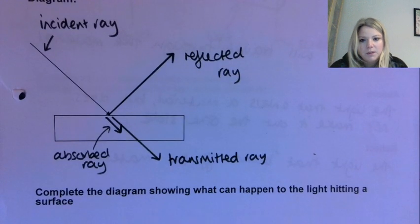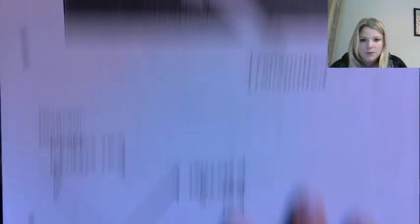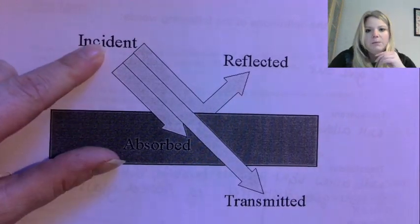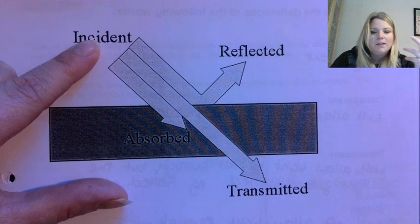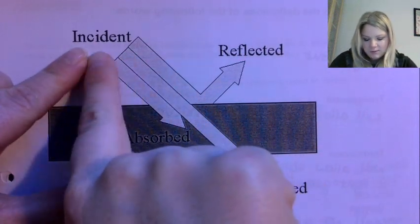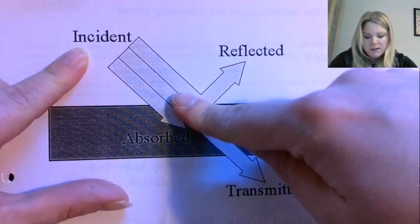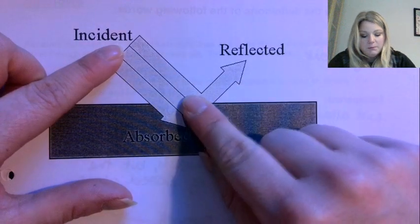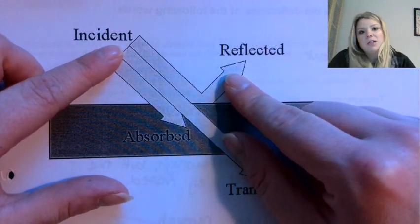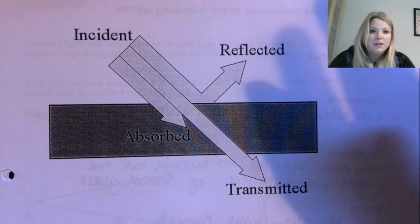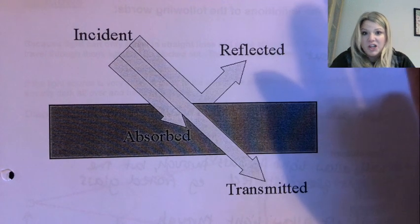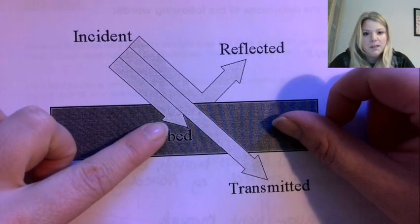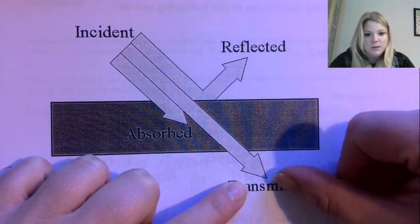Over onto page 51 then, we spent a bit of time looking at what actually happens whenever light hits a surface. So I'll go to the one at the top of the page actually. Anytime we're labeling light rays, the one that's going into the situation we call the incident ray, and whenever light hits a surface it can do one of three things or a mixture of these three things. Some light might get reflected, and how much gets reflected will just depend on the material that we're talking about and how shiny it is. Some will get absorbed by the material and some will get transmitted through, and again how much of these ones just depends on the material itself.